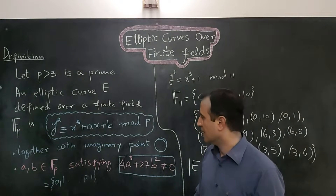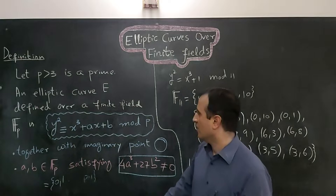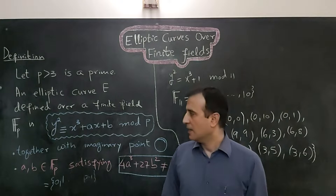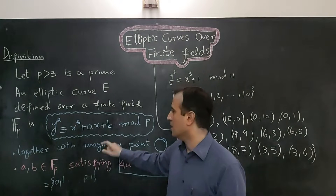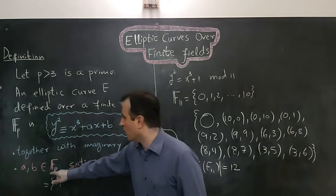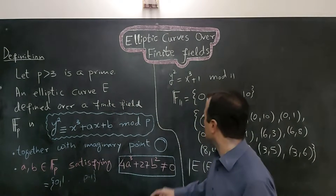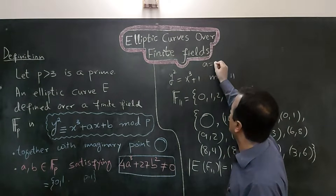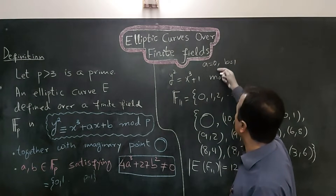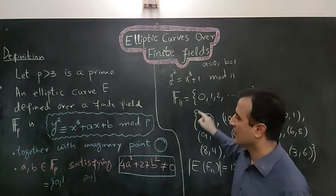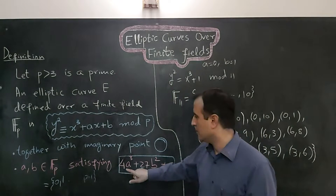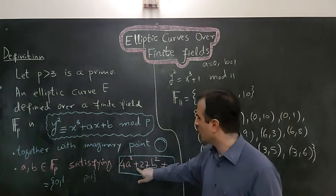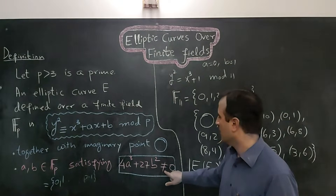A third question is: what are a and b? Using different values of a and b you can have different kinds of elliptic curves. a and b can be any numbers as long as they belong to the field. In this case a equals zero and b equals one. Additionally, a and b must satisfy the condition: 4a cubed plus 27b squared must not be equal to zero.